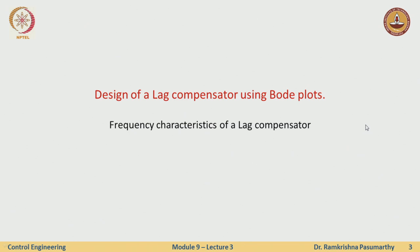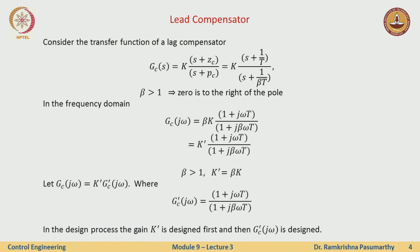How does this lag compensator look like? By construction, I have a gain k, a zero and a pole placed in the same manner as we did while doing compensation via root locus in the time domain. The value of beta is chosen such that it is greater than 1, which means the zero is to the right of the pole — again as we did in root locus. In the frequency domain I can write down the sinusoidal transfer function: beta times k times (1 + jωT) in the numerator, and similarly the denominator with beta. I call this number k' = beta × k.